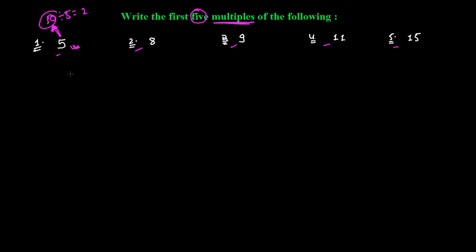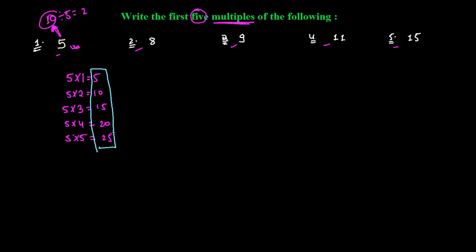Simply write: 5×1=5, 5×2=10, 5×3=15, 5×4=20, 5×5=25. So the list of numbers 5, 10, 15, 20, and 25 are the first five multiples of 5, because these are the first five numbers that 5 can divide without any remainder.